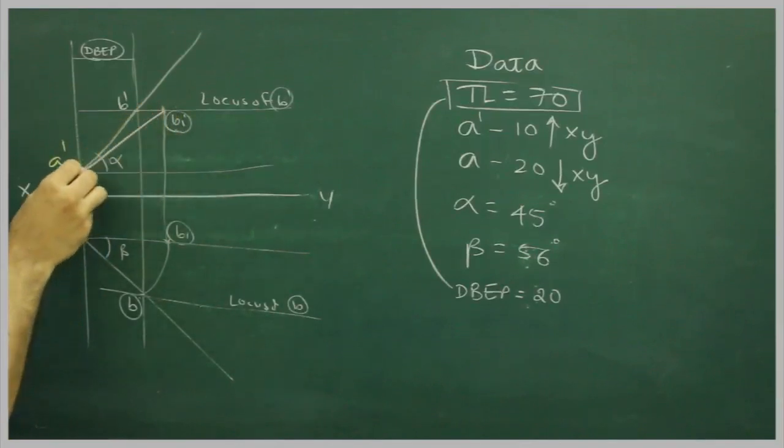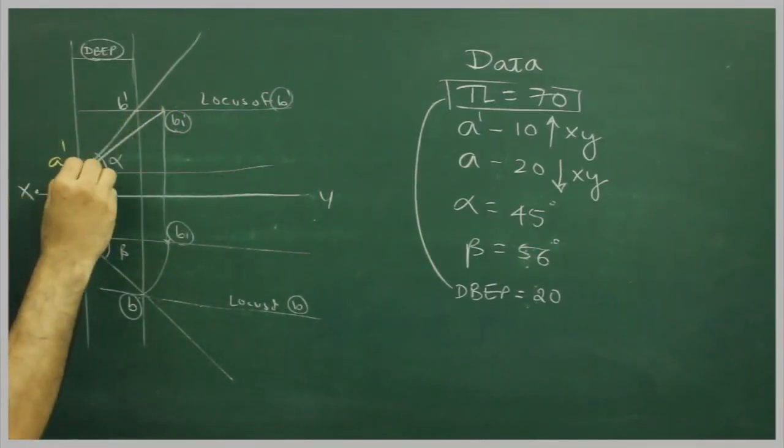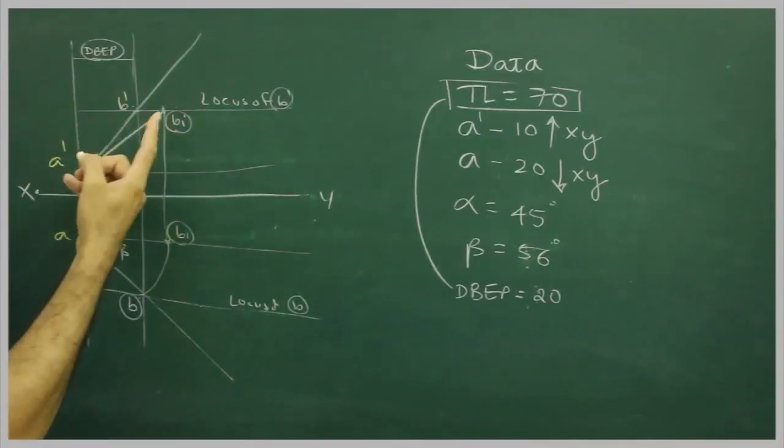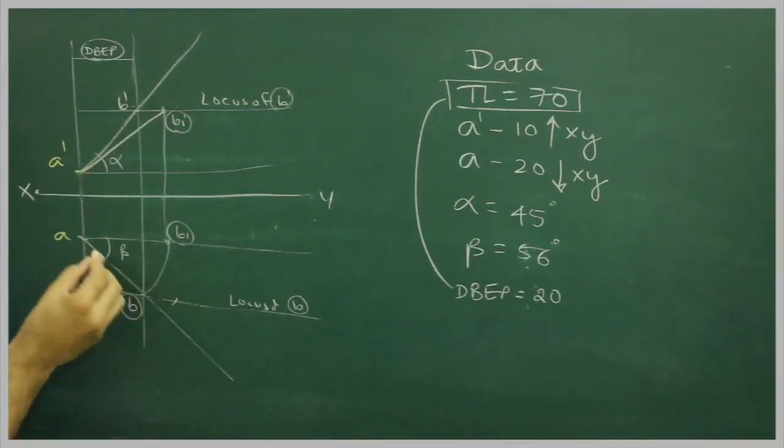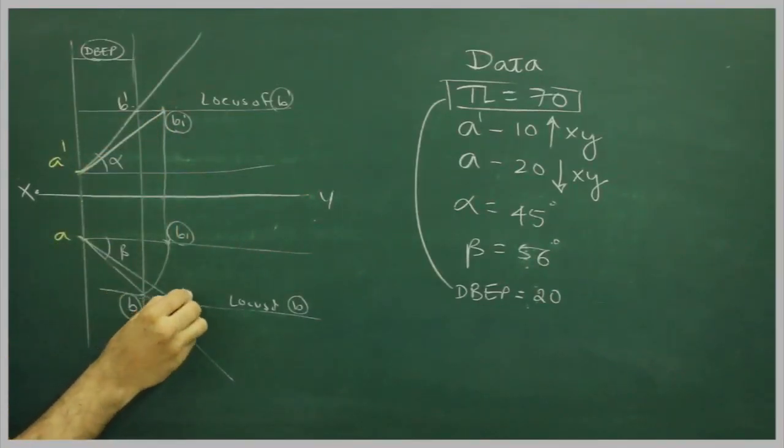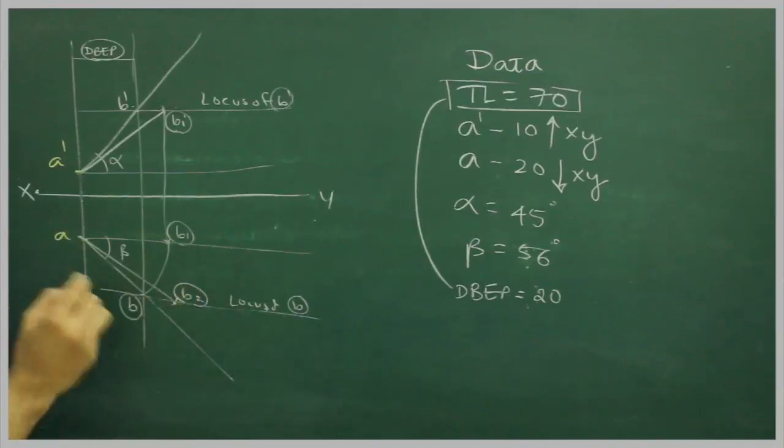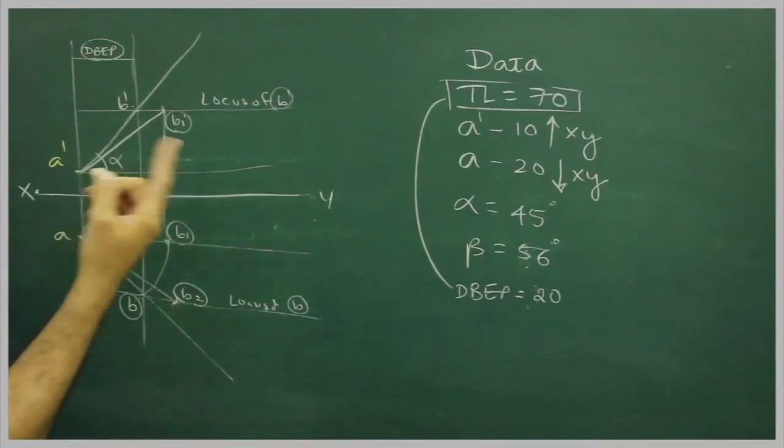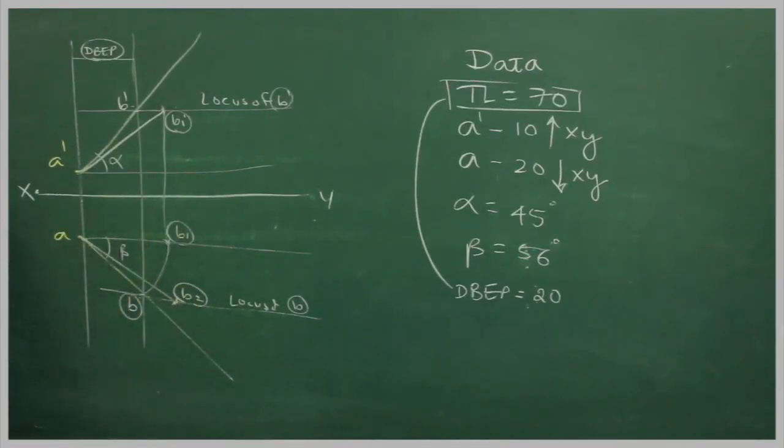So, we got true length. Same way, I can rotate A dash, B dash, or I can take this directly, and I can cut off this line. So, I will get B2. But, if you see, our original true length is 70.